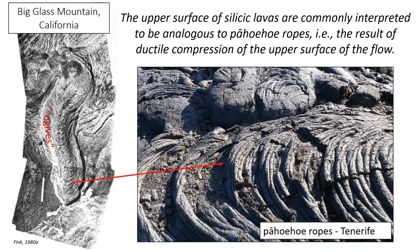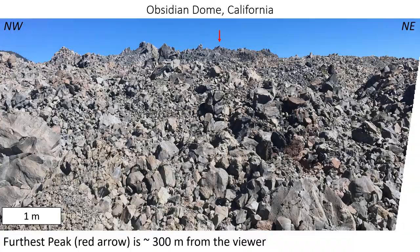The common interpretation is that silicic lavas are analogous to pahoehoe ropes on mafic lavas, and thus are caused by ductile compression of the upper surface of the flow. This image is showing the arcuate folds of the pahoehoe ropes on lava in Tenerife, being compared to the ogives seen on Big Glass Mountain in California.